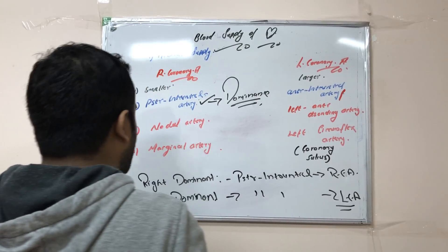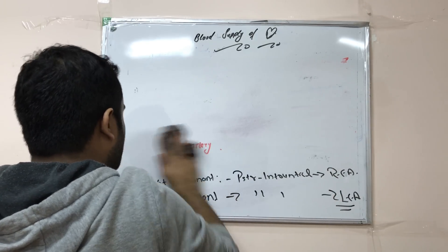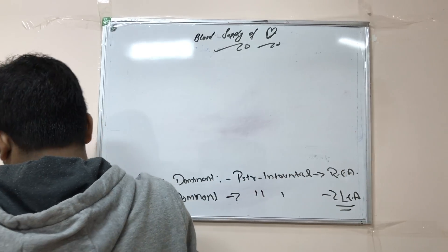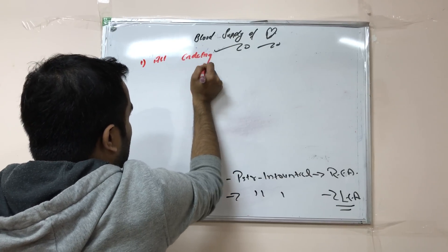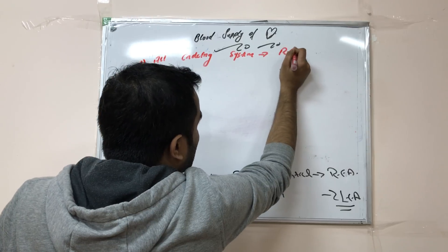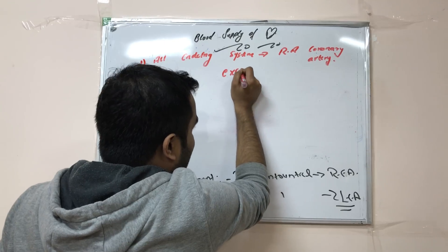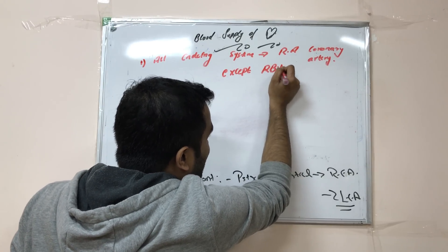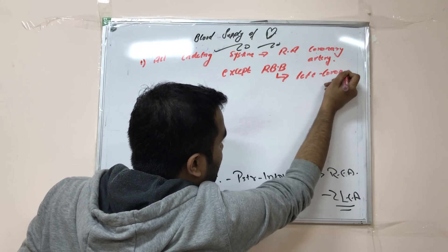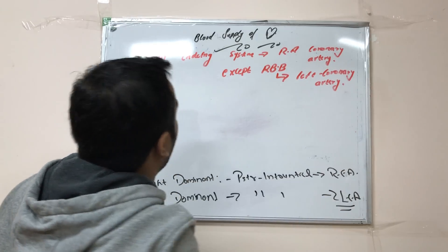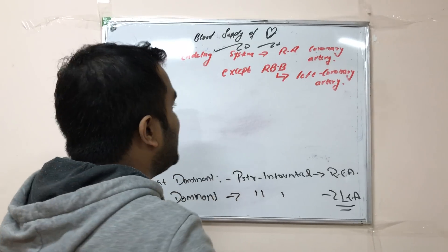The next important MCQ point: all of the conducting system of the heart is supplied by the right coronary artery — but there is an exception. The right bundle branch is supplied by the left coronary artery. So remember: all conducting system is supplied by the right coronary artery, except the right bundle branch, which is supplied by the left coronary artery.